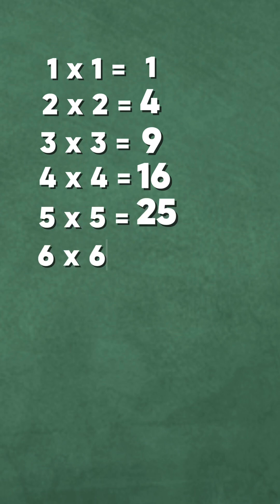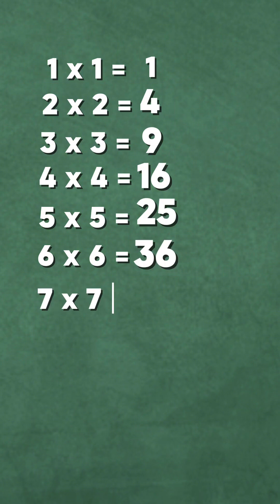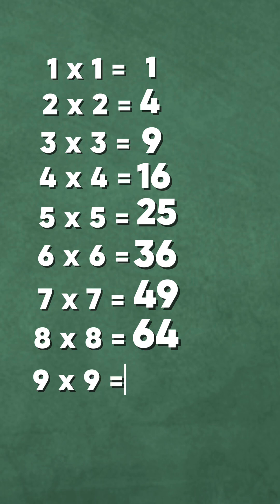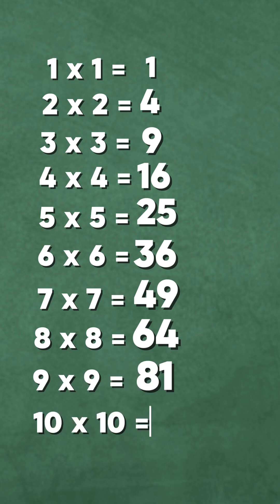6 times 6 is equal to 36. 7 times 7 is equal to 49. 8 times 8 is equal to 64. 9 times 9 is equal to 81. 10 times 10 is equal to 100.